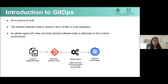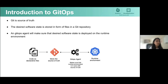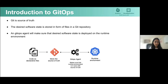Thank you, Jonathan. To begin with, I'll give a brief introduction of GitOps. GitOps is a way of implementing continuous deployment of cloud native applications. It is a workflow that emphasizes Git being the single source of truth.